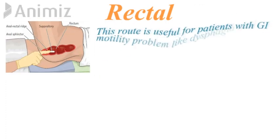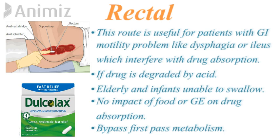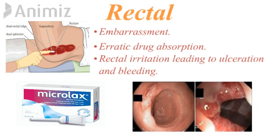Next is rectal route of administration. This route is useful for patients with gastrointestinal motility problems like dysphagia or ileus which interfere with drug absorption. It is used when drugs are degraded by stomach acid, and for elderly patients and infants who are unable to swallow orally. There is no impact of food or gastric emptying on absorption, and this route bypasses first-pass metabolism. Limitations include inconvenience and embarrassment, erratic drug absorption, and rectal irritation leading to ulceration and sometimes bleeding.